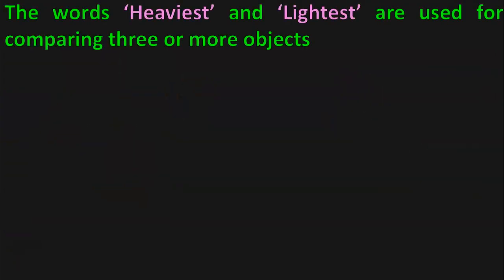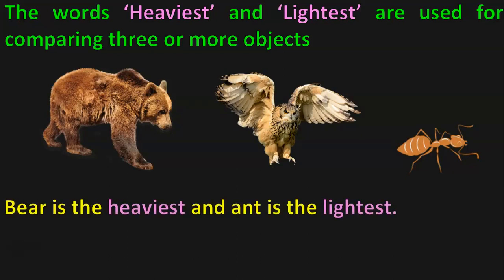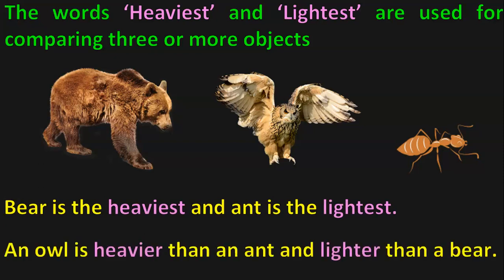The words heaviest and lightest are used for comparing three or more objects. Now we have a bear, an owl, and an ant. Which is the heaviest of these three animals? Bear is the heaviest and ant is the lightest. An owl is heavier than an ant and lighter than a bear. So the terms we learnt in weight are heavy and light.